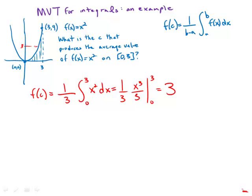And so then the question just becomes what x produces that? Well now we have to solve the equation f of x equals 3, x squared equals 3, x equals plus or minus the square root of 3.